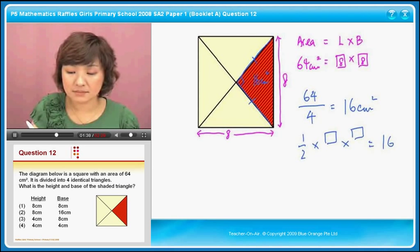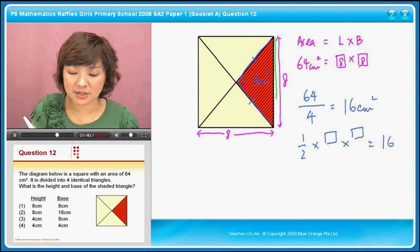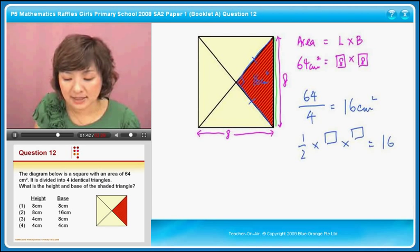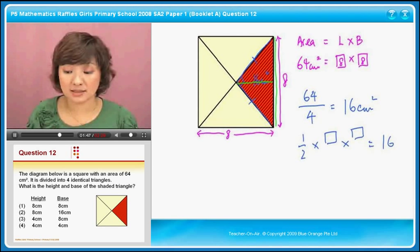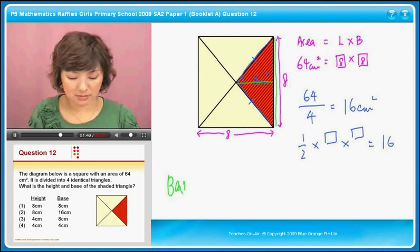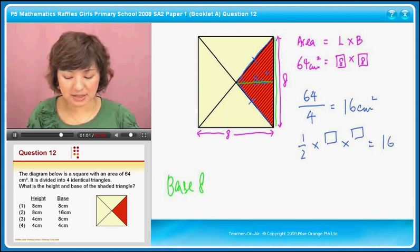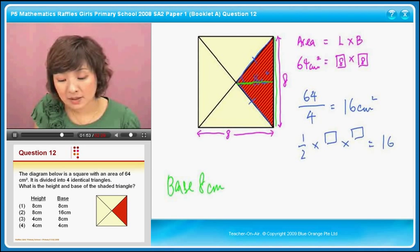Right. If you look at this triangle, this is actually the base of the triangle. And this is actually the height. Okay. Obviously, you know that the base is 8. Okay. The base is 8. Let me write it down. Base is 8 centimeters. Right. What about the height? This height.